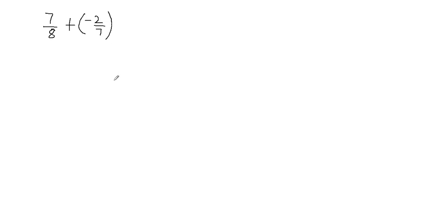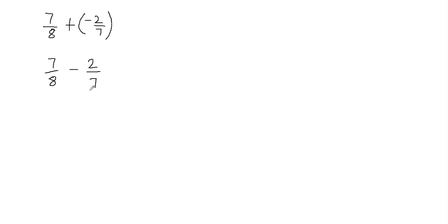In this video we'll learn how to add or subtract fractions with unlike denominators. We have 7/8 plus negative 2/7. Now 7/8 plus negative 2/7 is equivalent to 7/8 minus 2/7, because positive times negative is going to be negative.